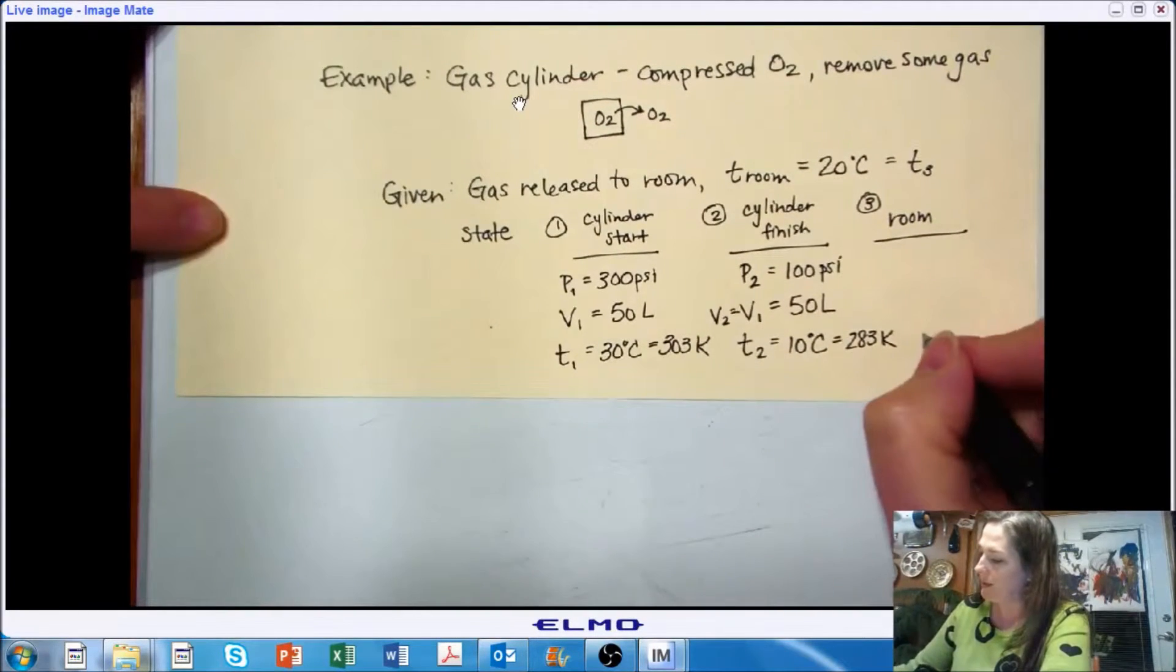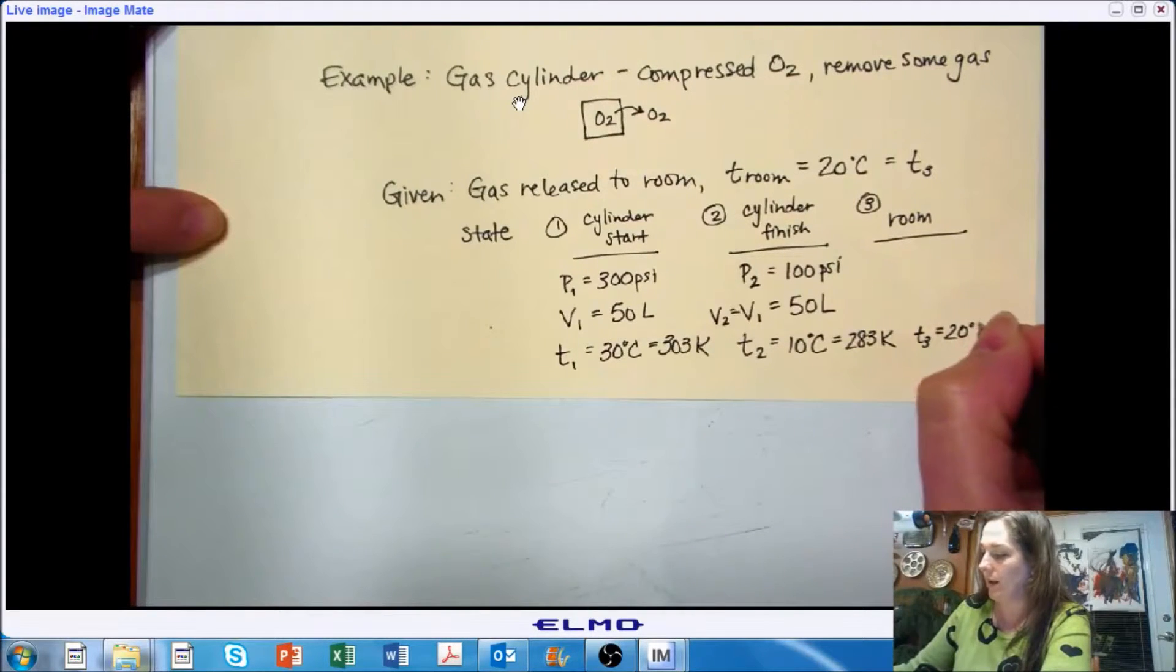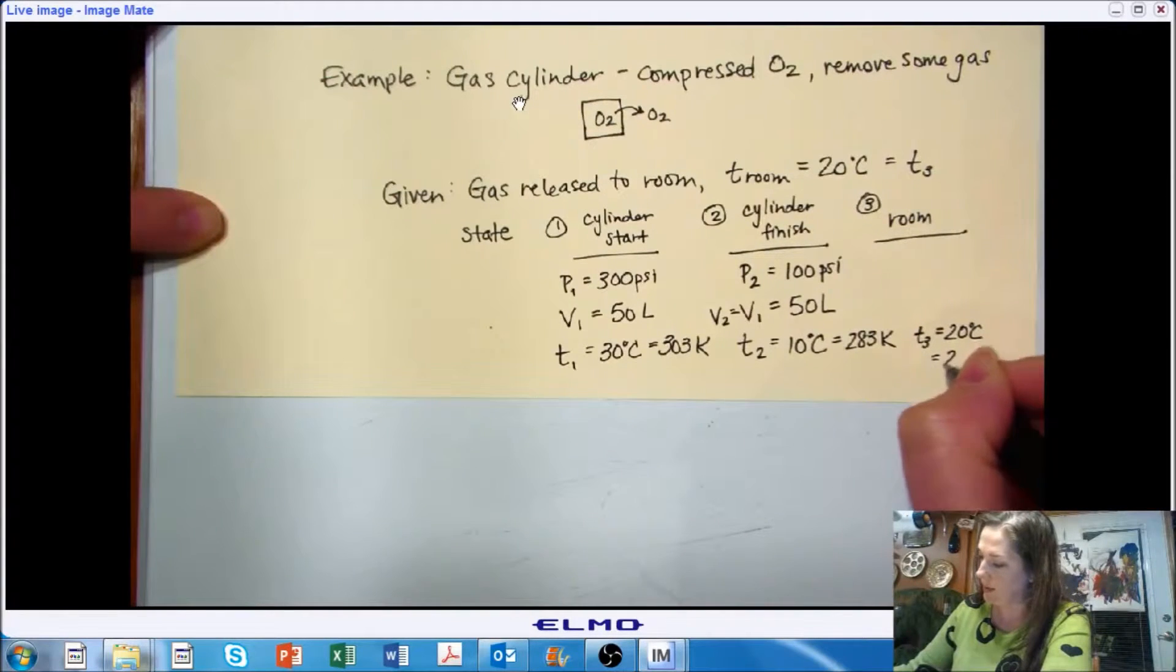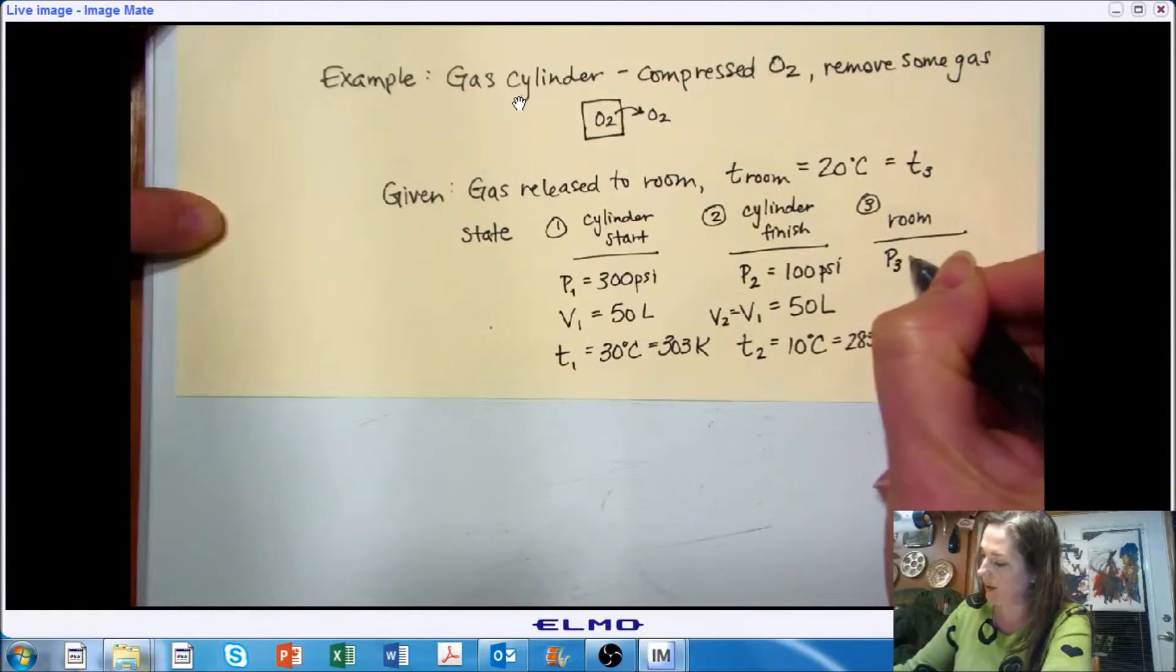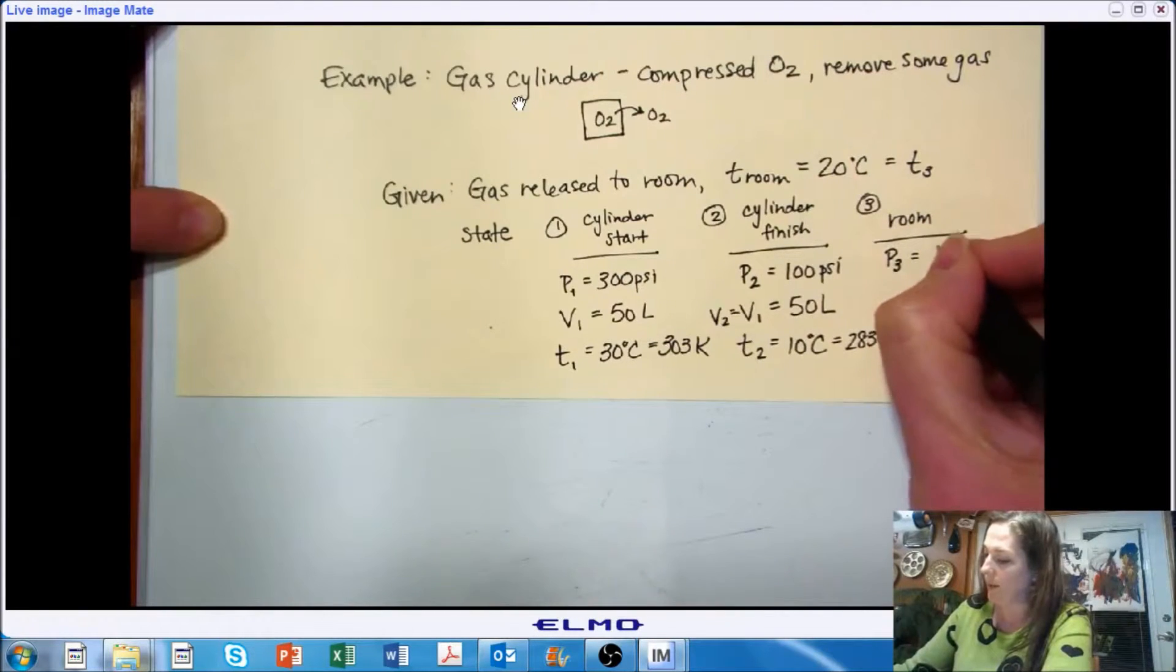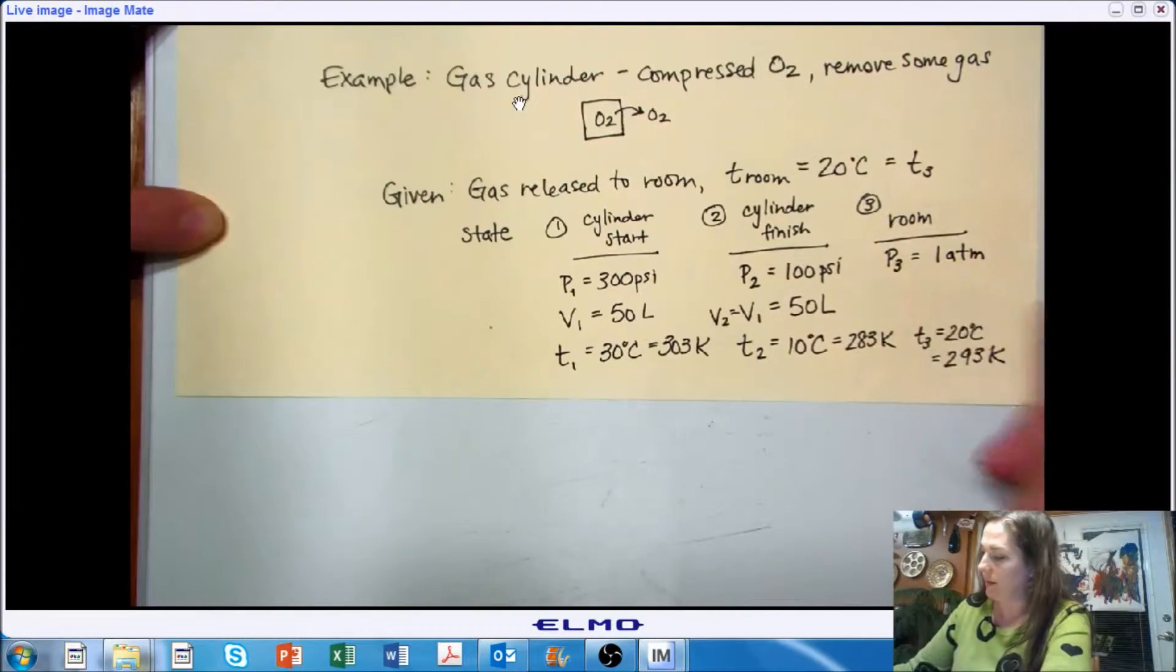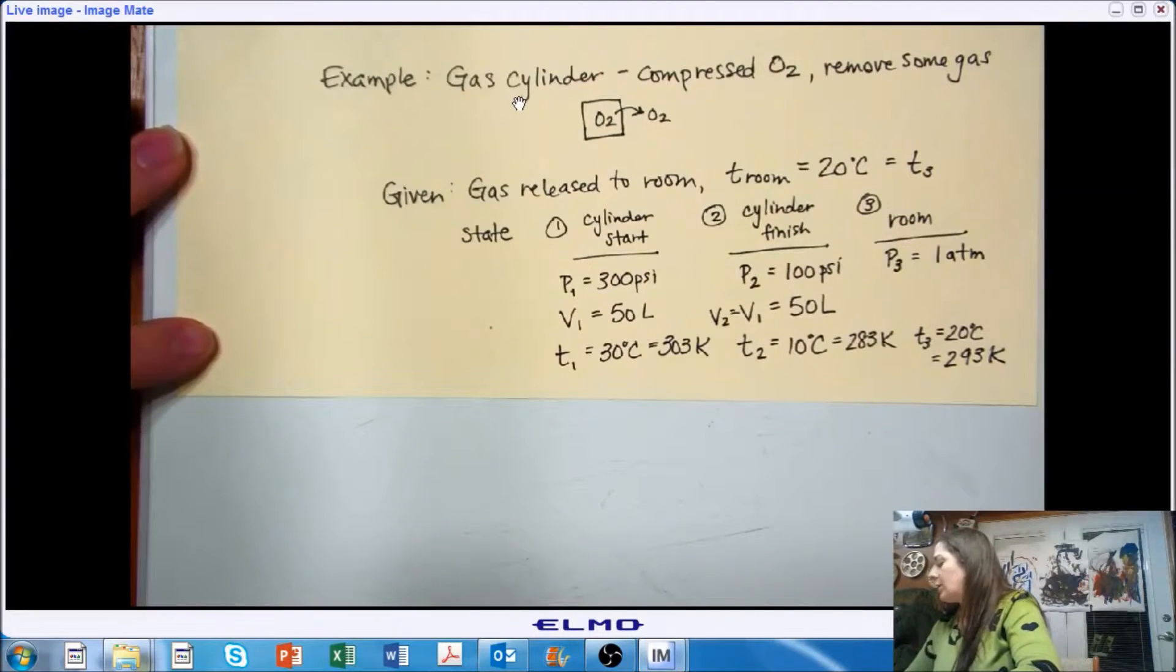What we know about the room is that our temperature of the room is not going to be changed by the amount of gas that we've released. And so it's at 20 degrees C, or 293 kelvin. We also know that our pressure in our room is at one atmosphere. So the gas that we're releasing isn't going to impact the pressure in the room either.